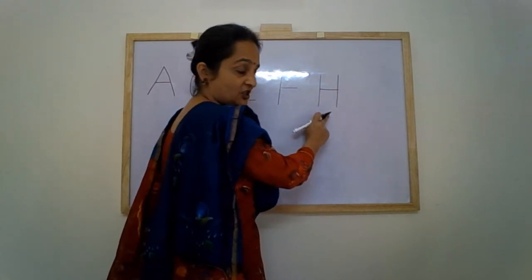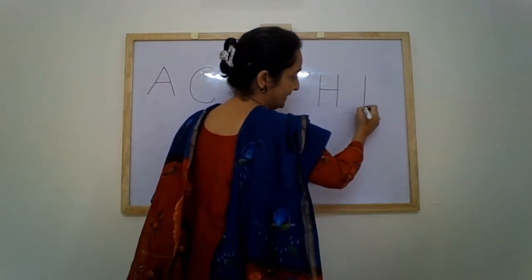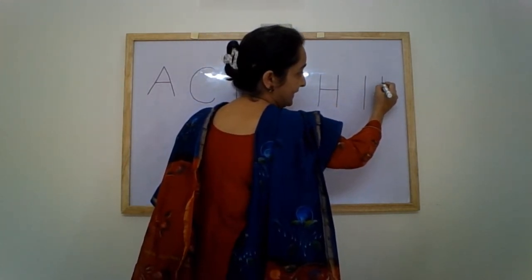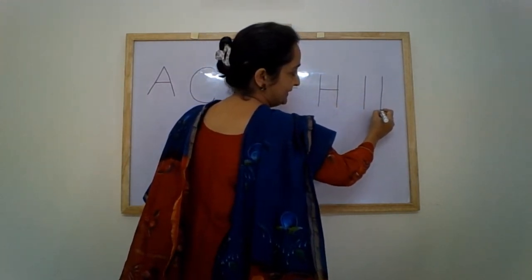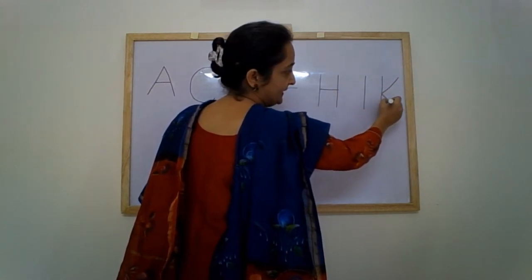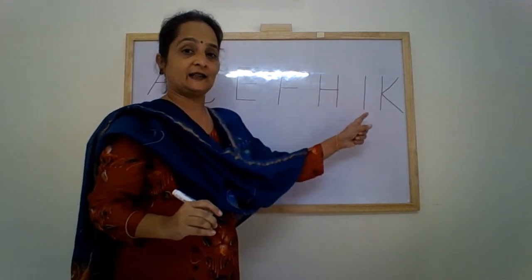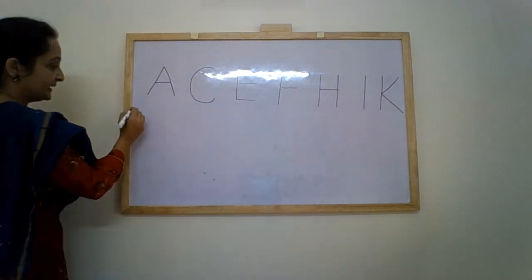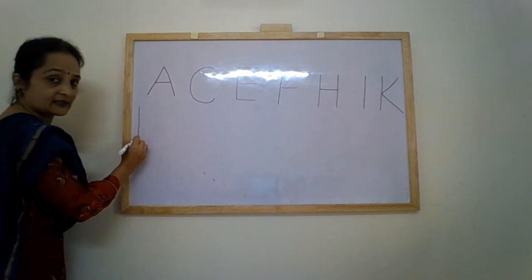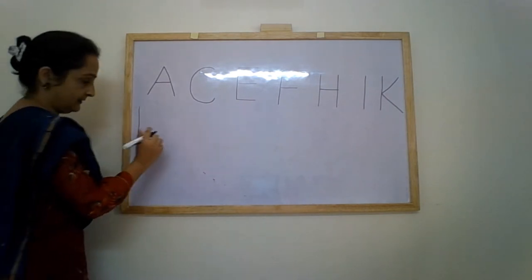Standing line, sleeping line in the middle, standing line again — letter H. One standing line — letter I. Standing line, slanting line going back, and slanting line going in the front — is letter K. Standing line, sleeping line — is letter L.